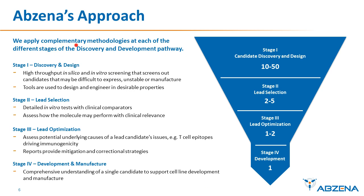Our approach is to apply a complementary set of methodologies at each of the different stages of the discovery and development pathway. Early on we look at in silico and some high-throughput methods to help screen with minimal cost, and then we apply physical and functional assessments as we go through the selection and optimization phases. Throughout the process we are looking to identify liabilities and apply mitigating and correctional strategies — for example, identifying immunogenicity risk and designing this out of the sequence. This may add some time on to the front end of our timeline, but it reduces the longer-term risk if issues are unearthed later in development when they are much more costly and time-consuming to fix.